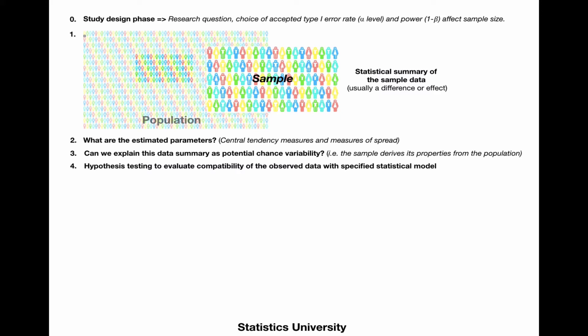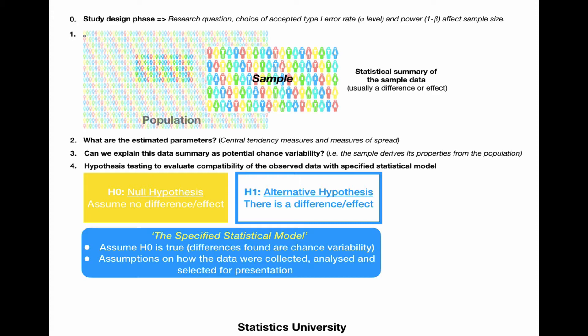In order to do that, we're going to use hypothesis testing to evaluate the compatibility of the observed data with the specified statistical model. In this model, the null hypothesis is usually defined as there is no difference or effect. The alternative hypothesis is defined as there is a difference or effect. That specified statistical model actually assumes that the null hypothesis is true. So, we are going to assume that all differences found are due to chance variability.